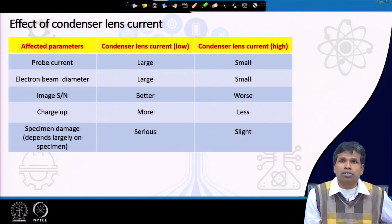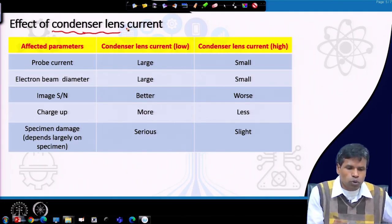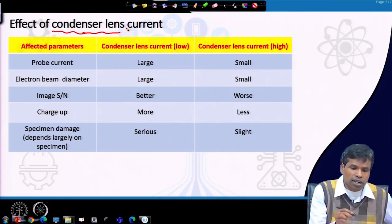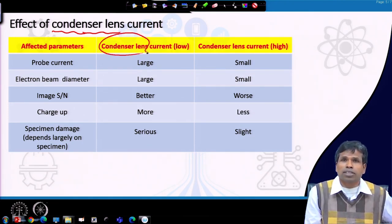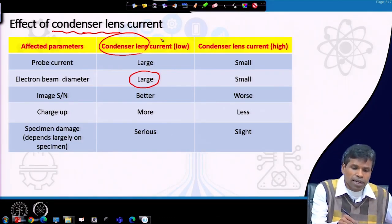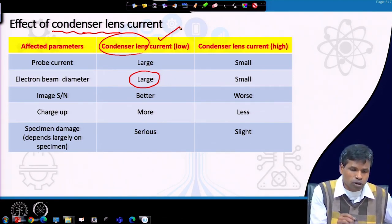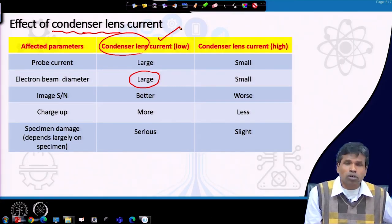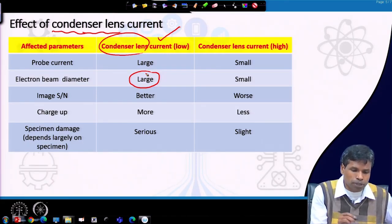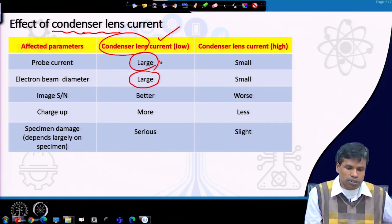The second parameter is condenser lens current. After the electron gun, the condenser lens condenses the electron beam to make it smaller. When condenser lens current is low, lens strength is low and cannot condense much, so beam diameter will be larger and probe current — the current on the specimen — will be large.